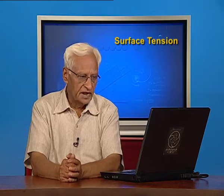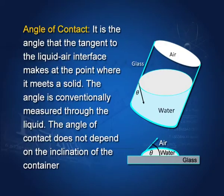Start with the angle of contact. If this is a vessel containing water, this is the water surface, there is air above it, and if I draw a tangent to this surface, then the angle between that tangent and the glass wall is called the angle of contact. This is the angle of contact, and it is conventionally measured through the liquid.